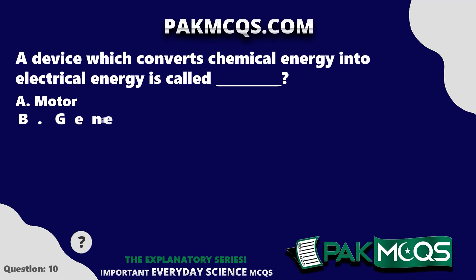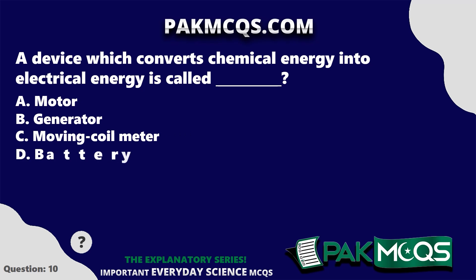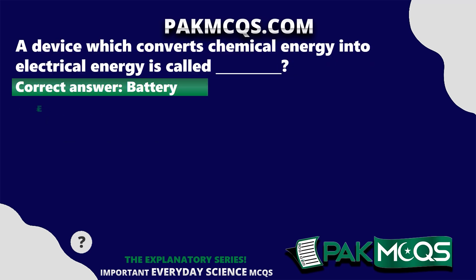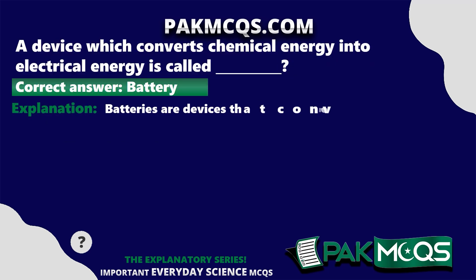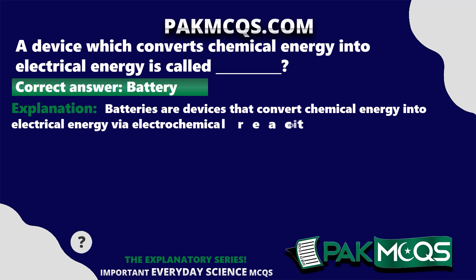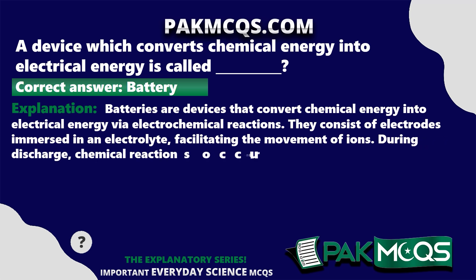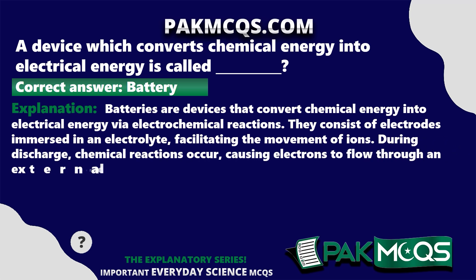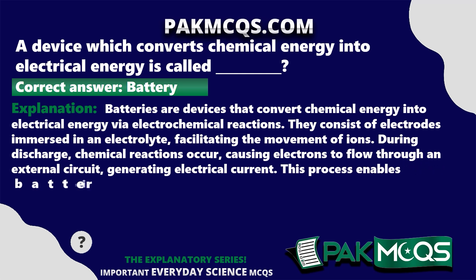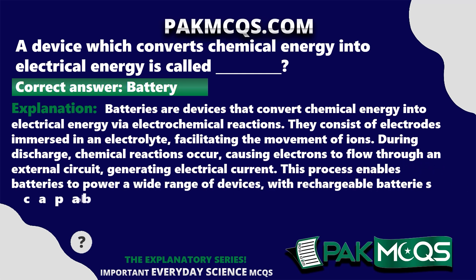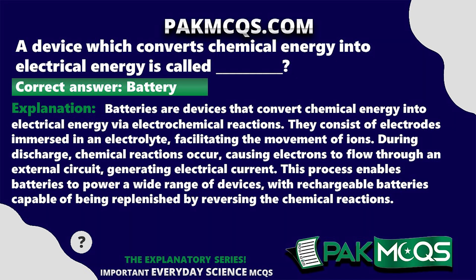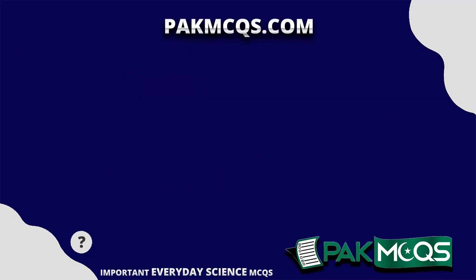A device which converts chemical energy into electrical energy is called? A battery. Batteries are devices that convert chemical energy into electrical energy via electrochemical reactions. They consist of electrodes immersed in an electrolyte, facilitating the movement of ions. During discharge, chemical reactions cause electrons to flow through an external circuit, generating electrical current. Rechargeable batteries can be replenished by reversing the chemical reactions.